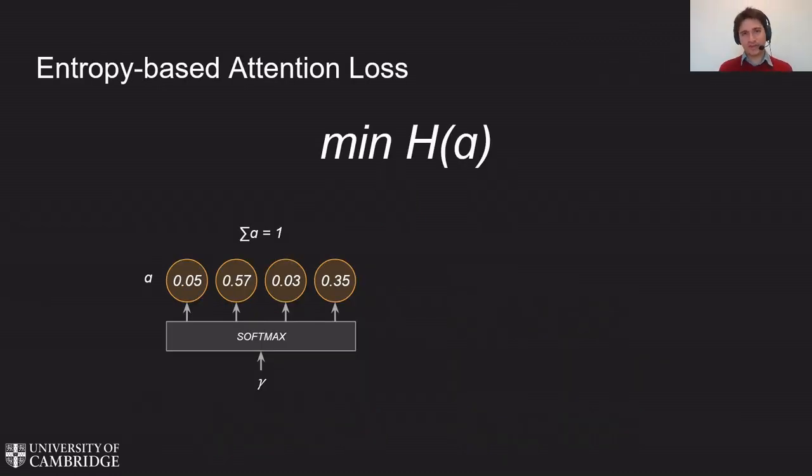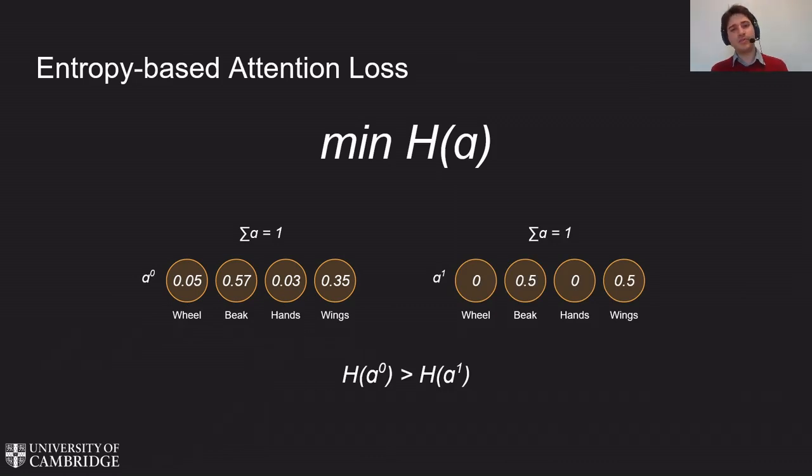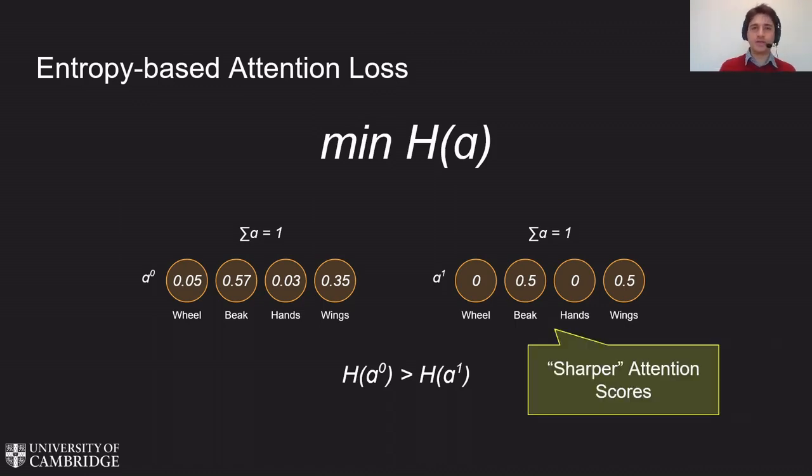Now, to minimize the complexity of local explanations that can grow arbitrarily long, in the loss function we minimize the entropy of the attention scores after the softmax. As an example, consider these two sets of attention scores. The entropy of the second set is lower than the entropy of the first. In fact, the entropy is minimized when the distribution of attention scores is sharp. This corresponds to pruning as many concepts as possible and getting concise local explanations as a result.